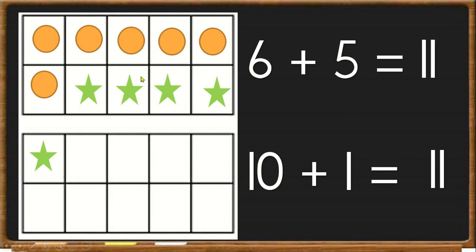See, we still have our 6 counters and then we have 5 counters which represent the number 5. And when we add them all together, we get 11.